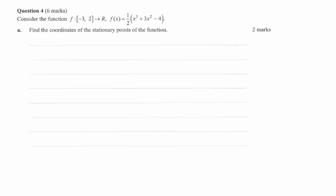Hello. For question 4, part A, we're looking to find the stationary points of this function. So we'll start by expanding the brackets. We get x cubed over 2 plus 3x squared over 2 minus 2.